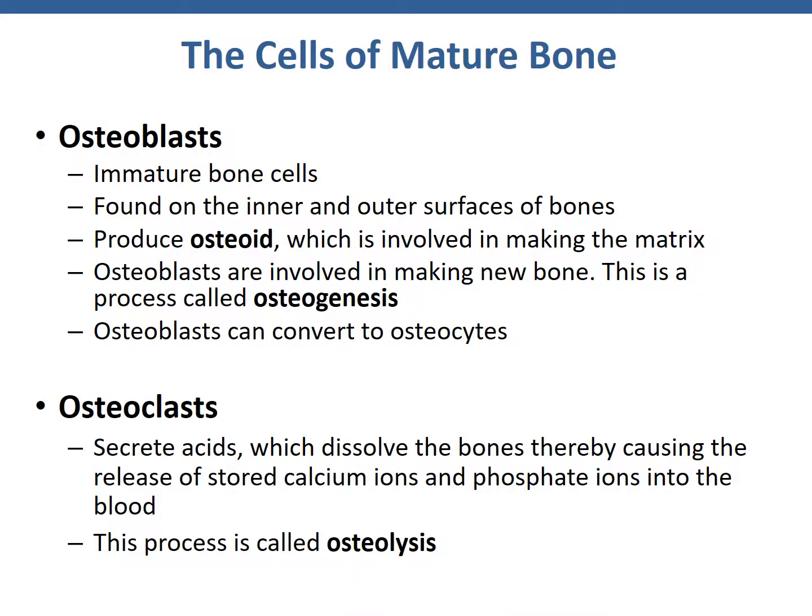There are four different types of cells that make up mature bone. First are osteoblasts — immature bone cells. Think 'it's a blast to be alive' — blast always means a young, immature cell. They are found on the inner and outer surfaces of bone near the endo- and periosteal layers. They produce osteoid, which is involved in making new matrix — the basic foundation for what new matrix will become. Osteoblasts are involved in building bone, a process called osteogenesis. Osteoblasts convert to osteocytes after they have securely built bone around themselves.